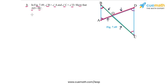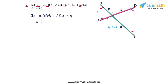Now let's write it out properly. In triangle OAB — the triangle on the left — we are given that angle B is less than angle A. This means the side opposite angle B, which is OA, is less than the side opposite angle A, which is OB. So OA is less than OB. Let's call this Inequality 1.